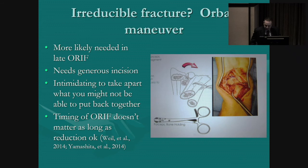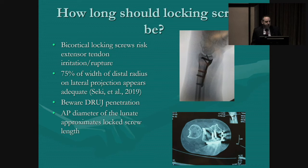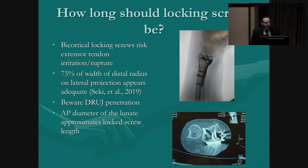How long should the locking screws be? It turns out that about 75% of the width of the distal portion of the radius is sufficient if you have good bone, particularly with an extraarticular fracture. The screws may appear very short, but they can be hidden by Lister's tubercle on x-rays. Dorsal penetration of the cortex risks irritating the extensor tendons and can lead to extensor tendon rupture. It can also, with longer screws, penetrate the distal radio ulnar joint. If you get true-to-size x-rays, the anterior-to-posterior dimension of the lunate bone will approximate the appropriate screw length.